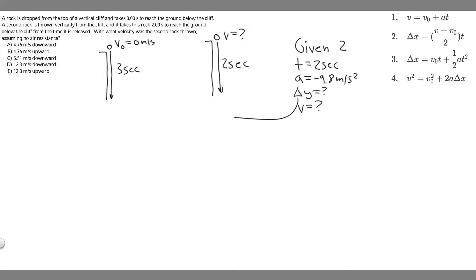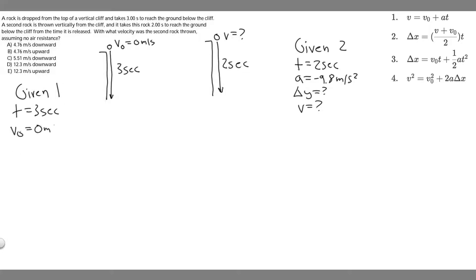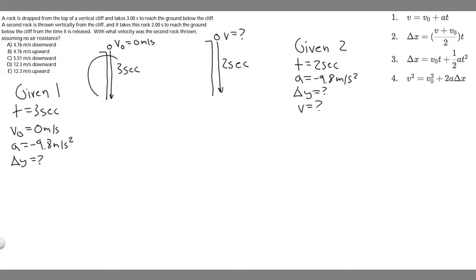The way we're going to find delta y is by using rock one. We write the given for rock one: the time is three seconds, the initial velocity is zero meters per second, and the acceleration is minus 9.8 meters per second squared. For rock one we actually do have three variables, so we can go ahead and solve for delta y, the change in y. Since the cliffs are the exact same height, if we find the distance from rock one we can plug it into rock two and solve for the velocity.